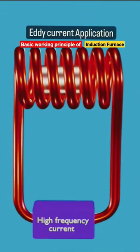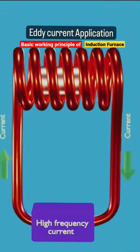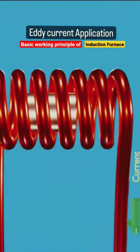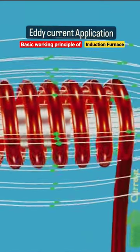Now, the high frequency of the varying current is passed through the coil, which develops changing magnetic flux linking to a metal piece.